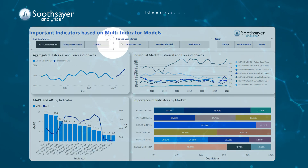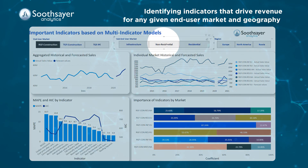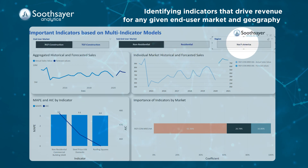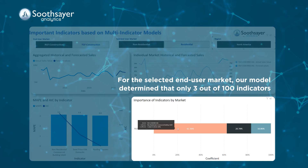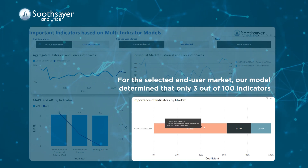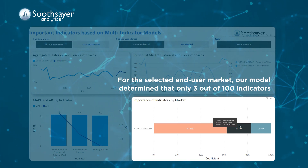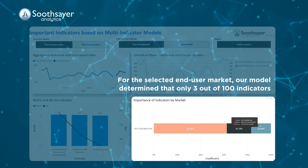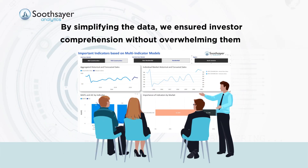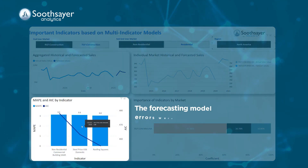Every selection of end-user market and geography will render the critical indicators that drive revenue for that selection. For the selected end-user market, our model determined that only three out of 100 indicators have the biggest influence on the revenue. By simplifying the data, we ensured investor comprehension without overwhelming them with too much information.